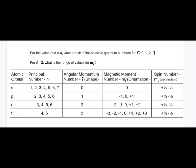For an L of two, which corresponds to D, what is the range of values for M sub L? That would be negative two up to positive two.